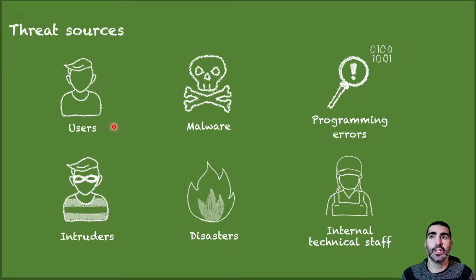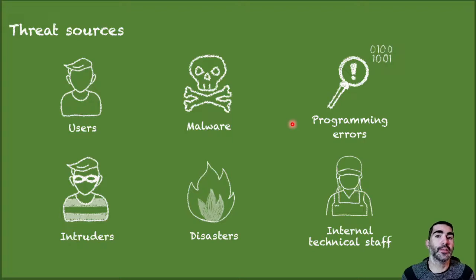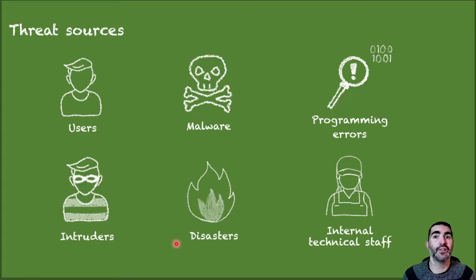Which are the sources of threats? The users themselves are the source of most security problems, so it's important that we are well-educated. We also have malware, which is software specifically created to harm the system, use our resources, or steal our data. We have programming errors in the software or operating system that may imply a vulnerability. We have intruders, who are people who gain access to resources to which they are not authorized. Disasters such as theft, fire, or flood may result in loss of material or information. And finally, sometimes the internal technical staff themselves are the origin of a threat due to some kind of problem with the organization or any other interest they may have.